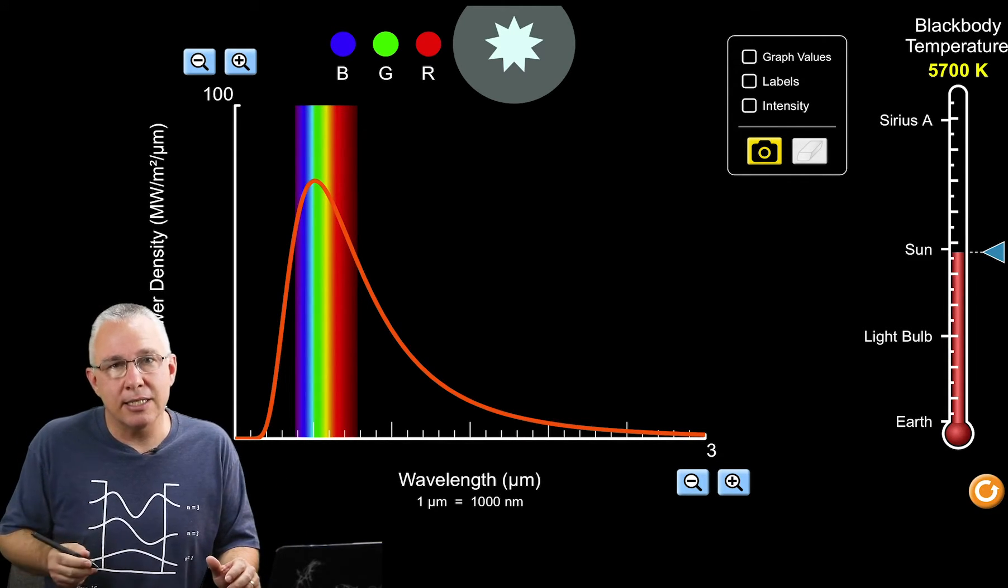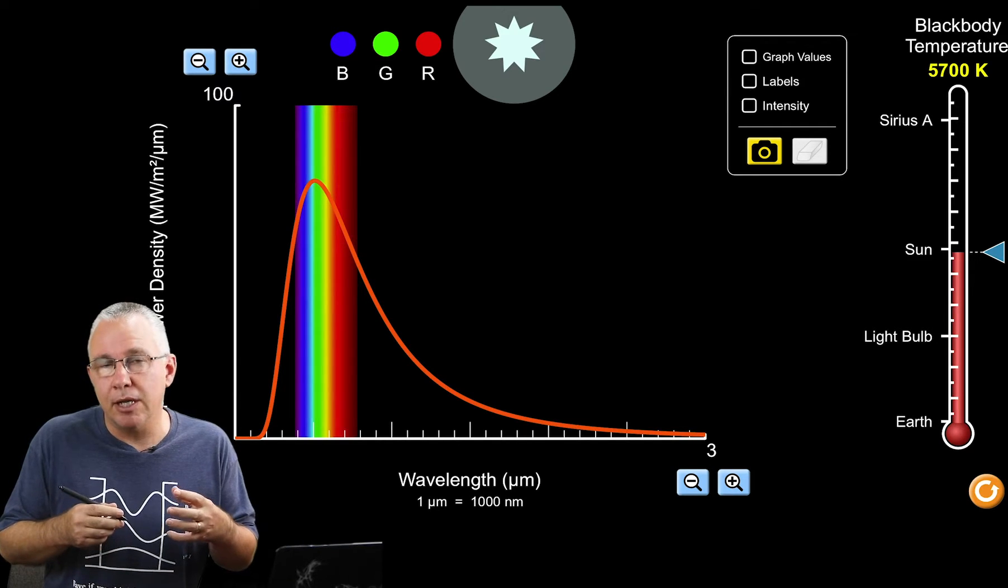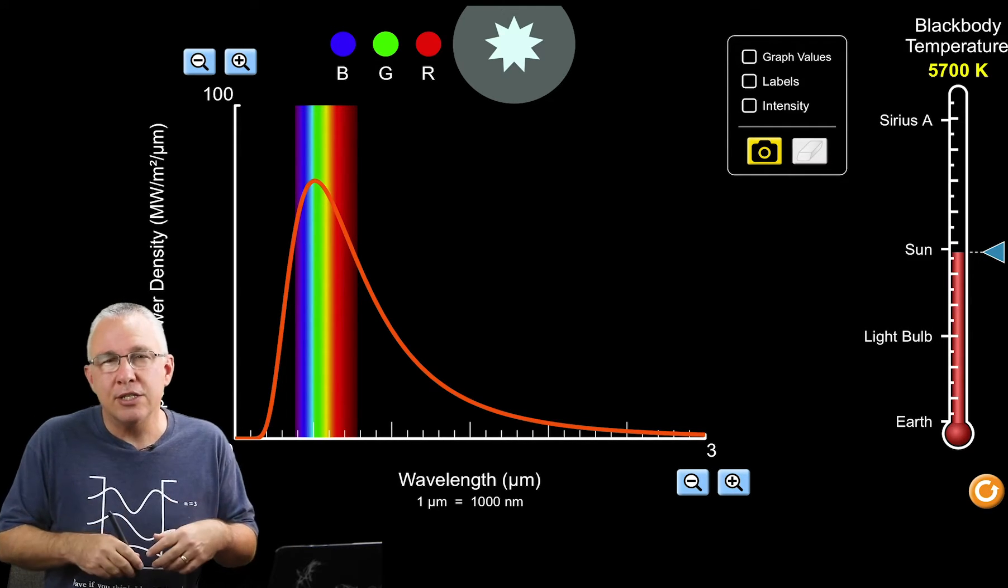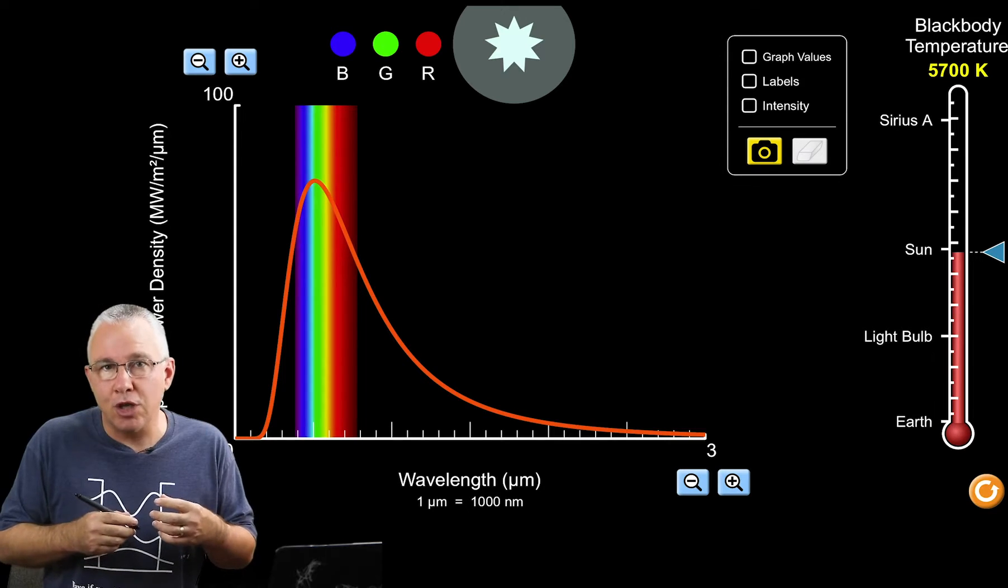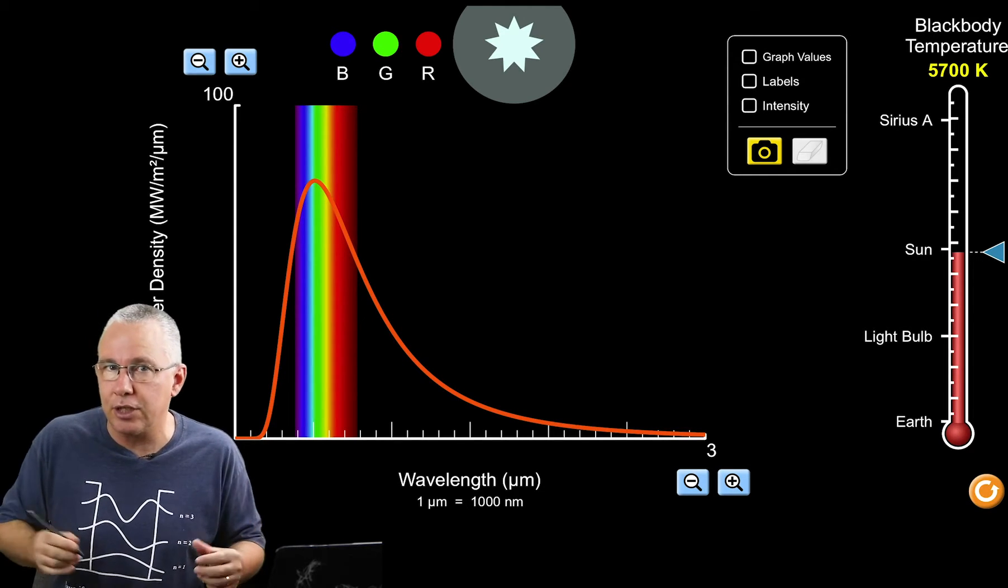In the case of stars, stars are generating energy by way of fusion within their core, so the light you see from stars is totally due to emission. There's no reflection going on.